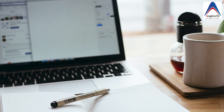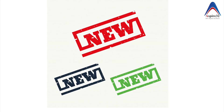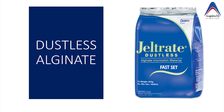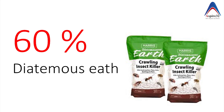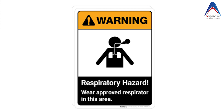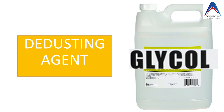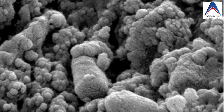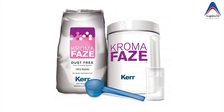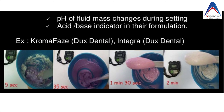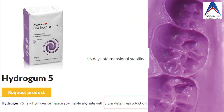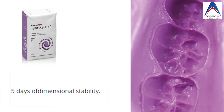Now let's talk about modifications of alginate impression material, which is very commonly asked in exams. The first modification is the introduction of dustless alginate. Since the impression material contains around 60% of the filler — diatomaceous earth — its small particle size can cause a respiratory hazard. To reduce this, a de-dusting agent called glycol is added, which agglomerates the powder making it less prone to dusting. The second modification is color-changing alginate powder, which helps judge the setting of the impression material better, based on a pH or acid-base indicator in the composition. The last recent modification is alginate with high accuracy and 5 days of dimensional stability, as claimed by the manufacturer.